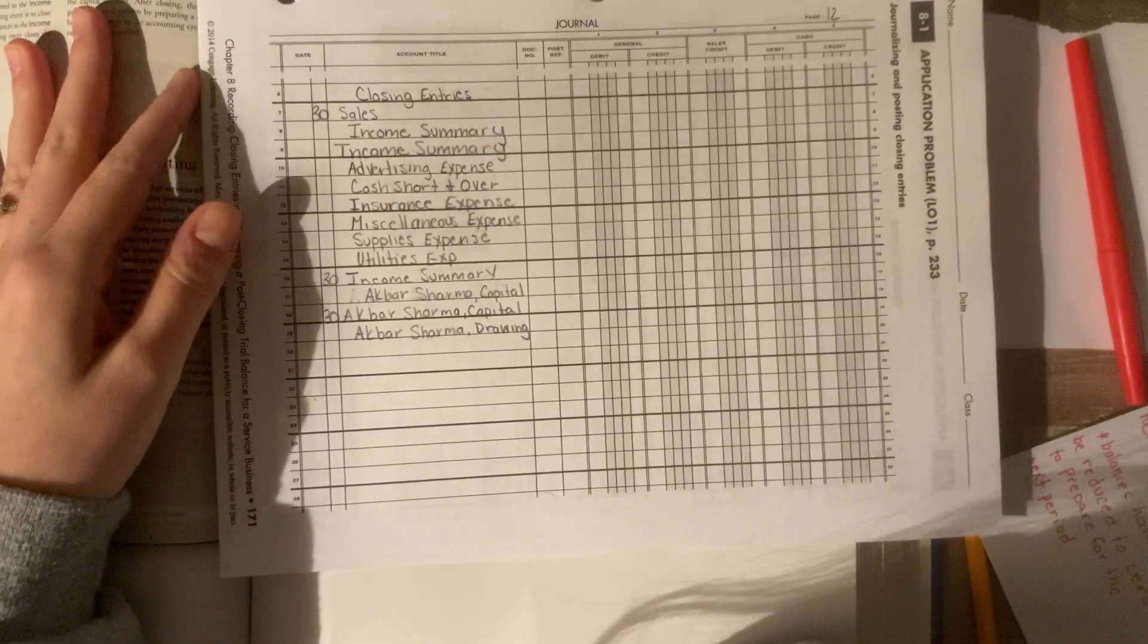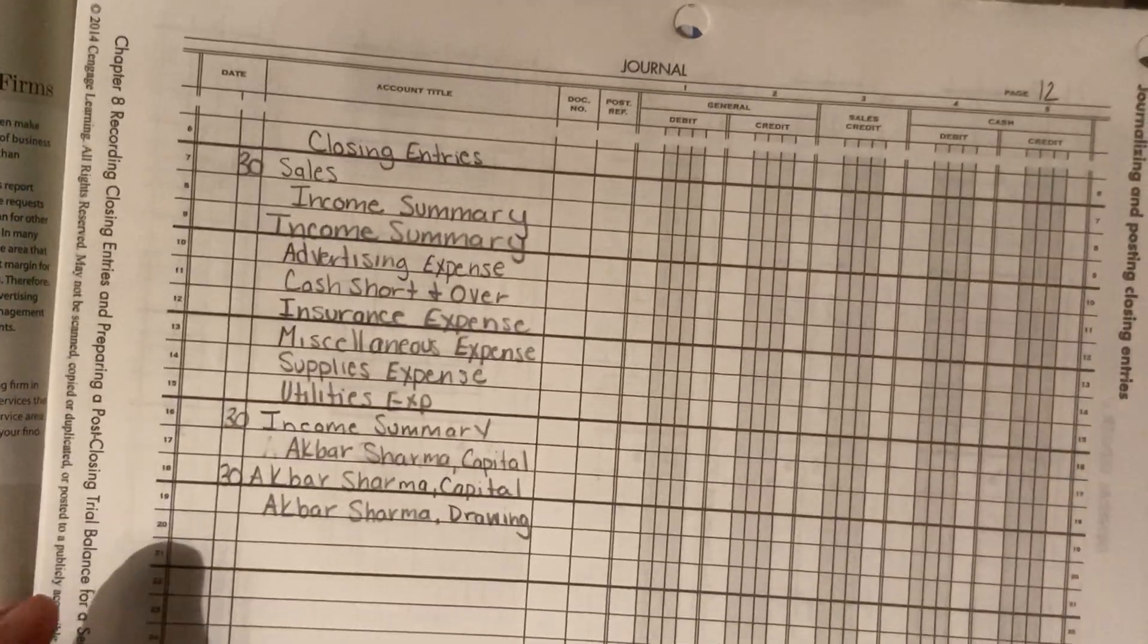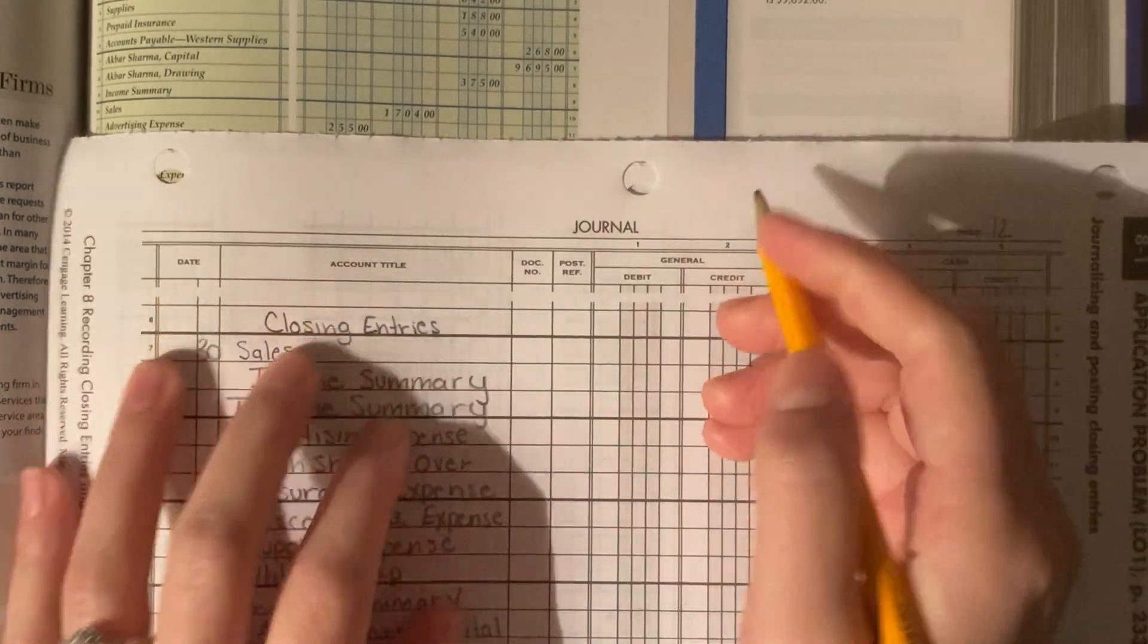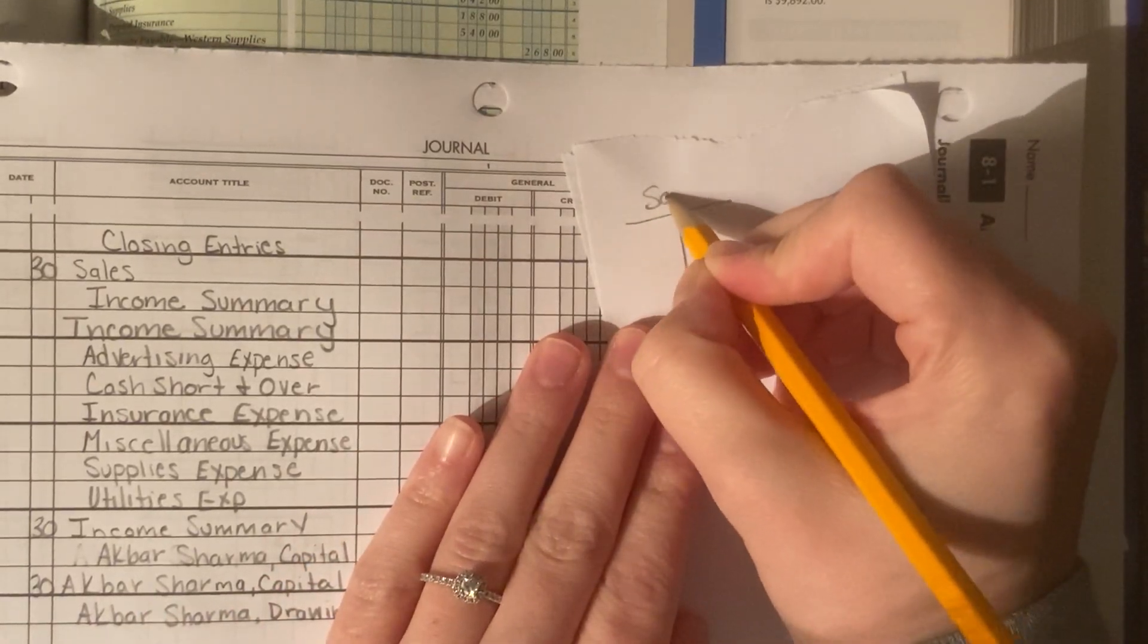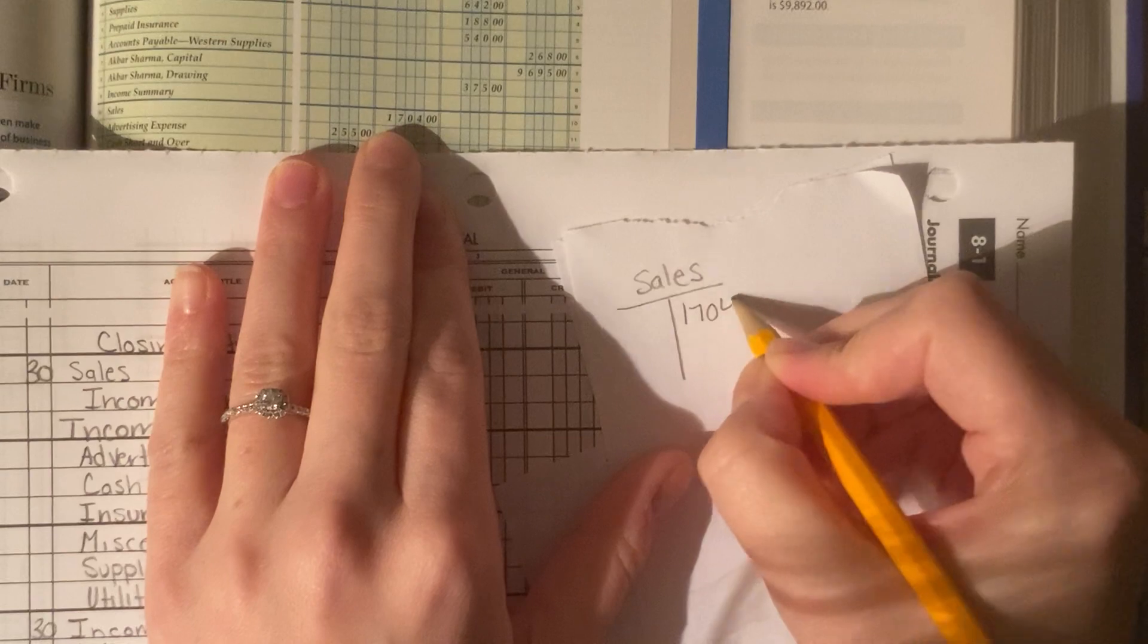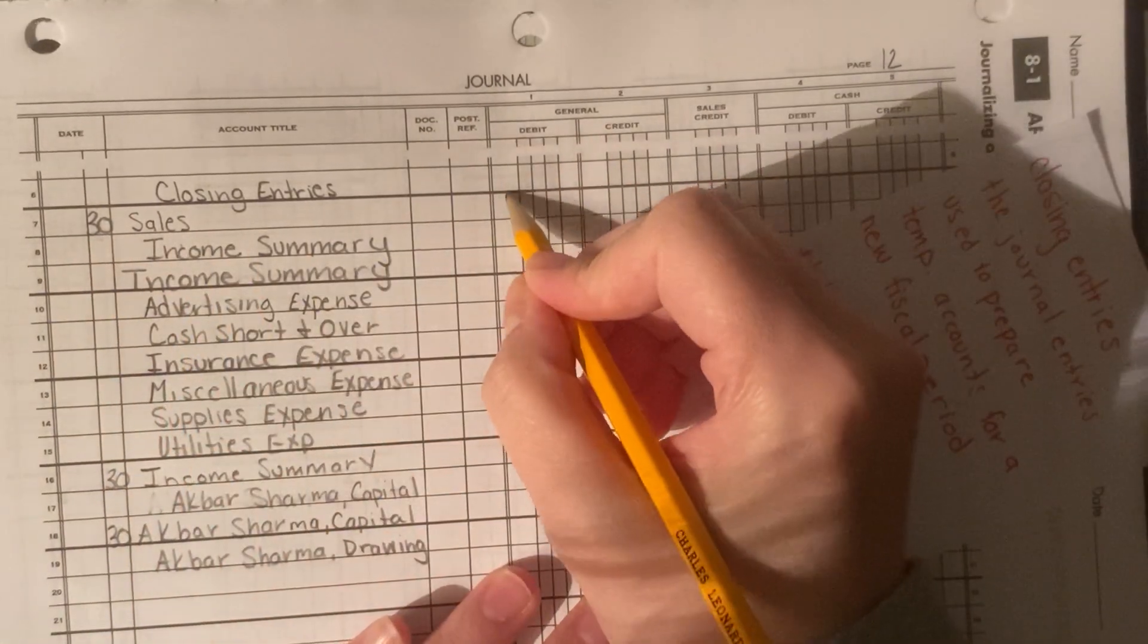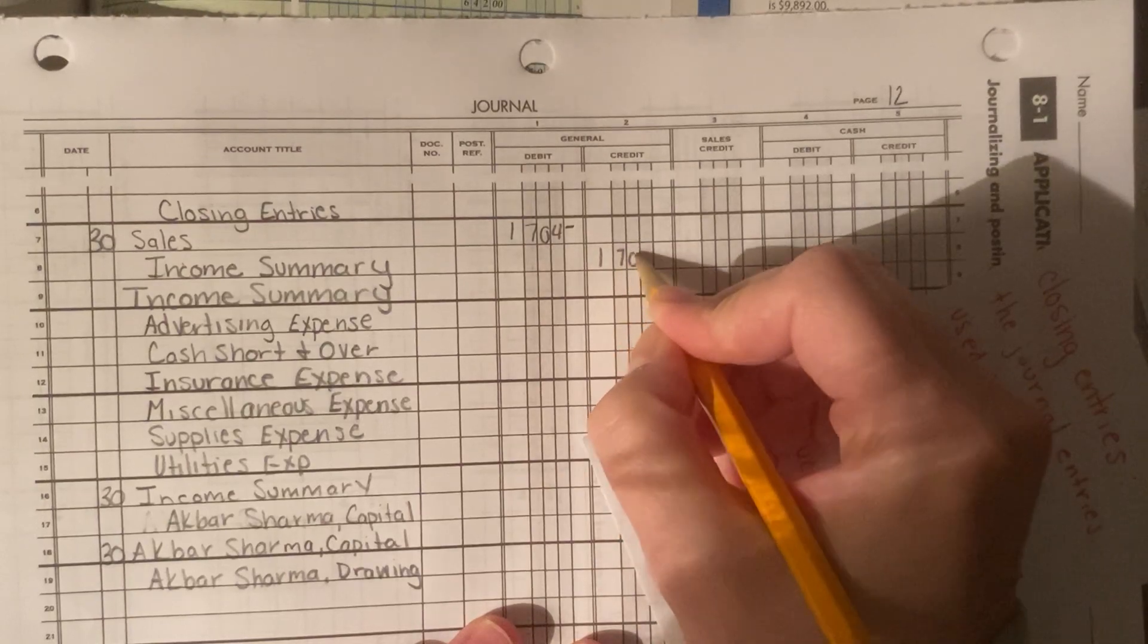So, what I did here was write all of my accounts that I am going to close. So, let's just go ahead and walk through those entries together. First one is my sales. So, we want to find sales on this sheet. Sales is $1,704, and it's a credit. Well, to close out the sales account, we originally started with the $1,704. To close it out, we need to debit it to the $1,704. So, we write the 30th sales, $1,704. And that just gets closed right to the income summary, $1,704.